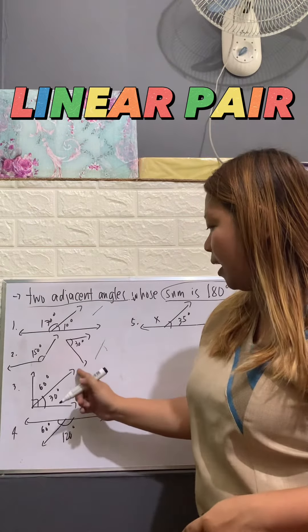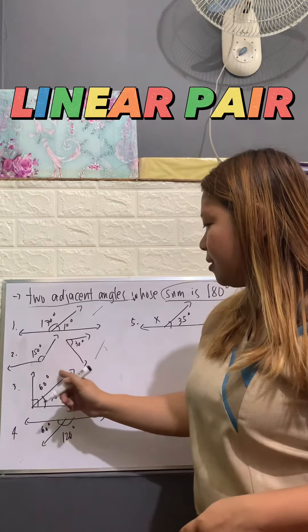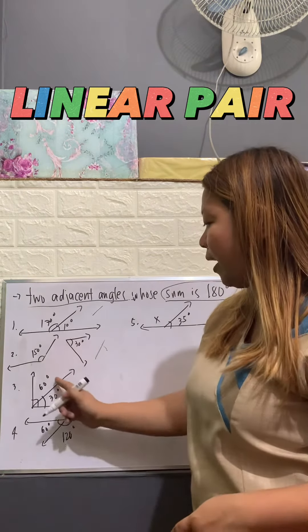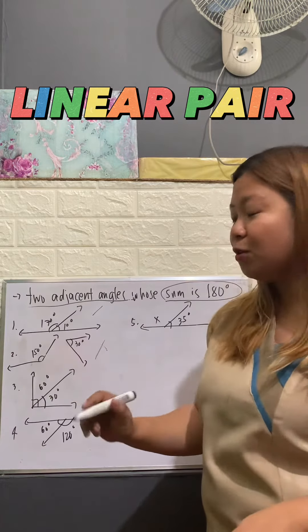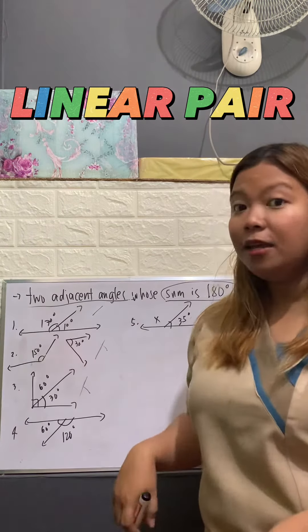How about this one? The two angles are adjacent but the problem is when you add both of these angles, the sum is only 90 so it's not supplementary. It's not linear pair.